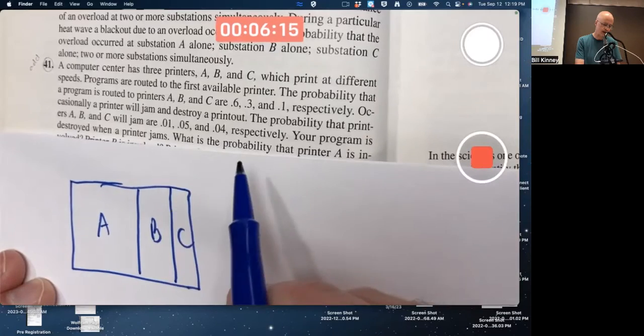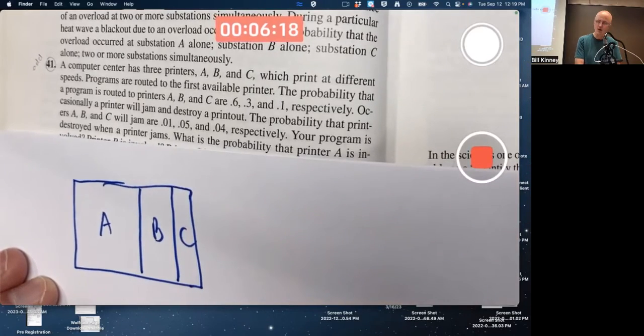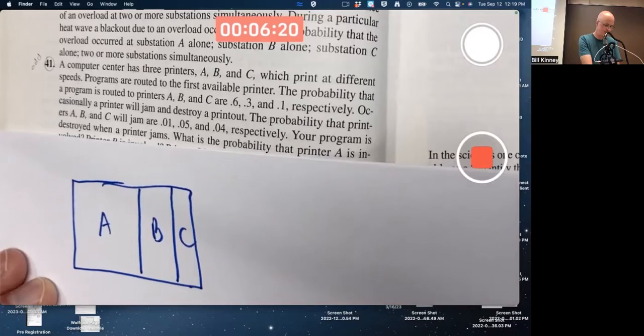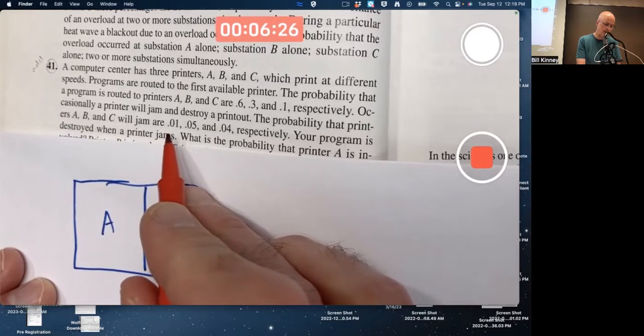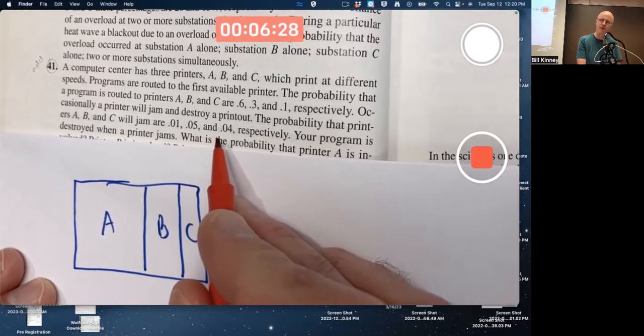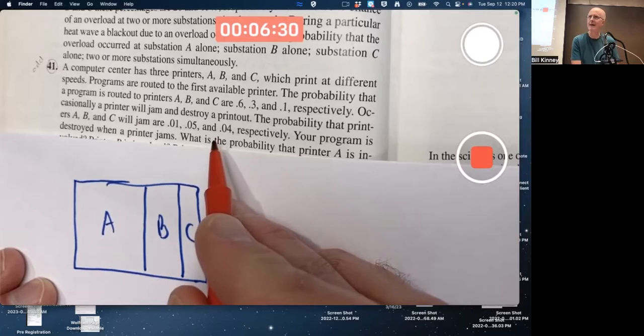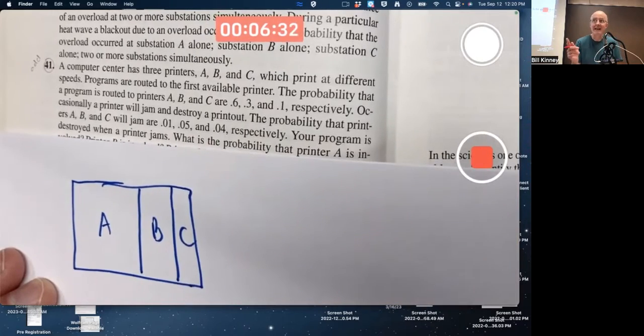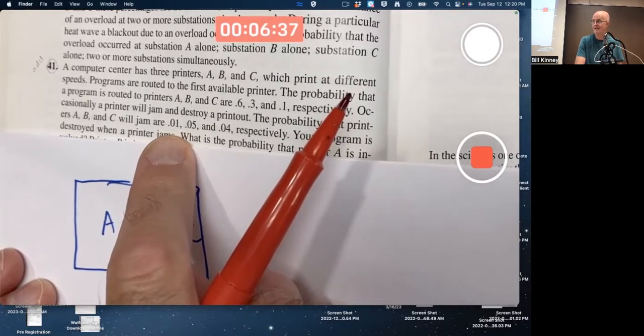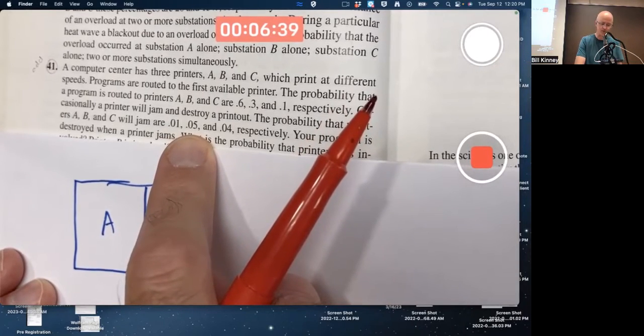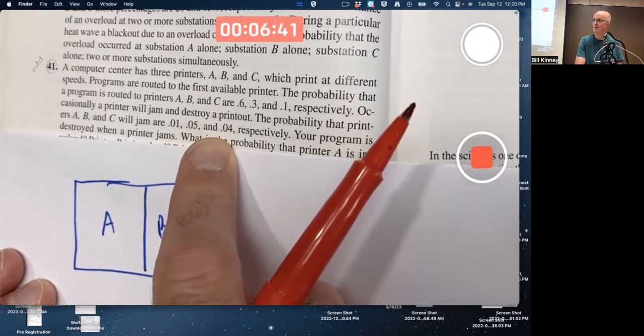Next bit of information we got about the jamming. You know, you hope usually printers don't jam, but sometimes they do. The probability that printers A, B, and C will jam are 0.01, 0.05, and 0.04. These are probabilities of jamming, given that, well, in this case, it got sent to printer A. In this case, it got sent to printer B. In this case, it got sent to printer C.